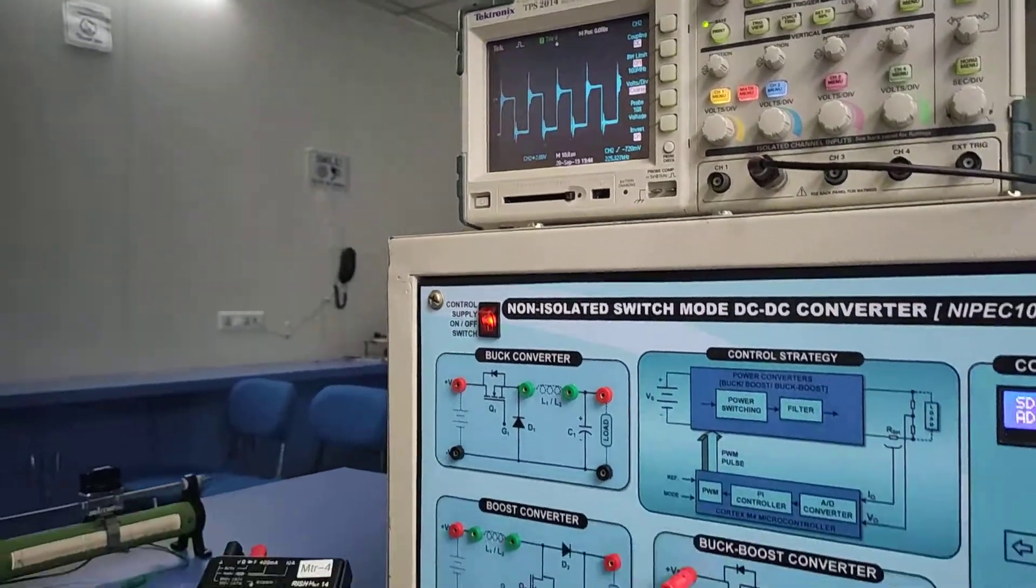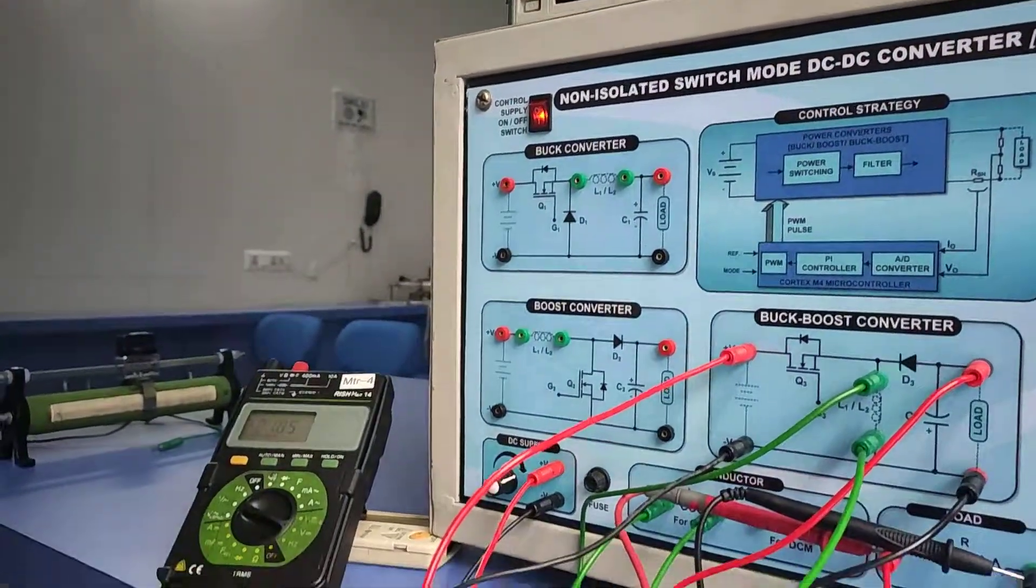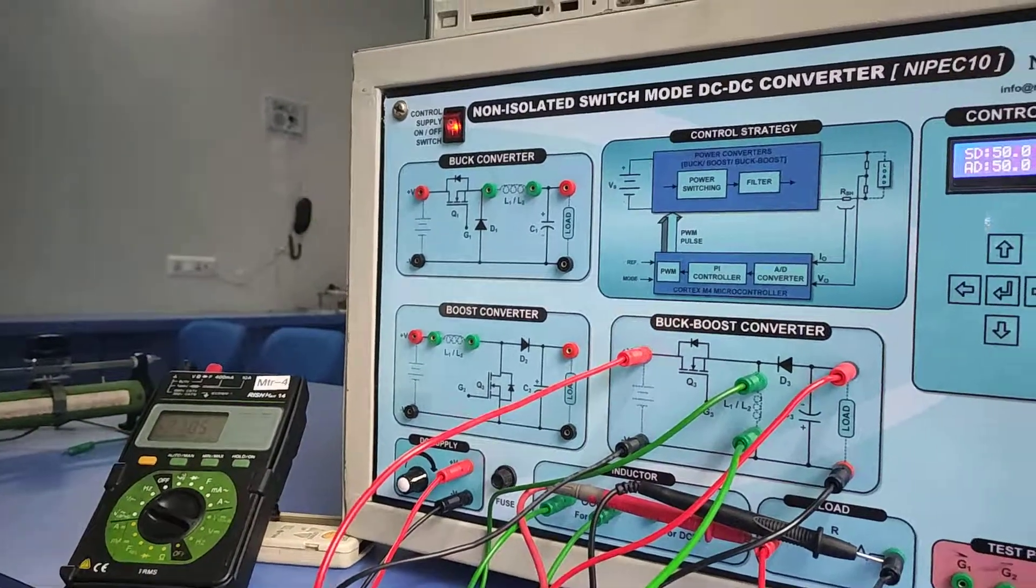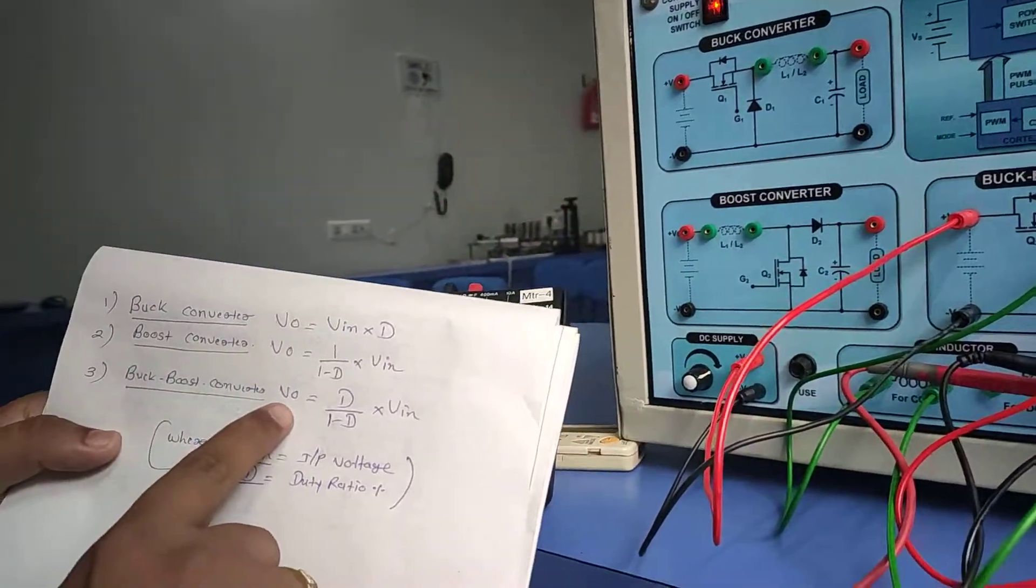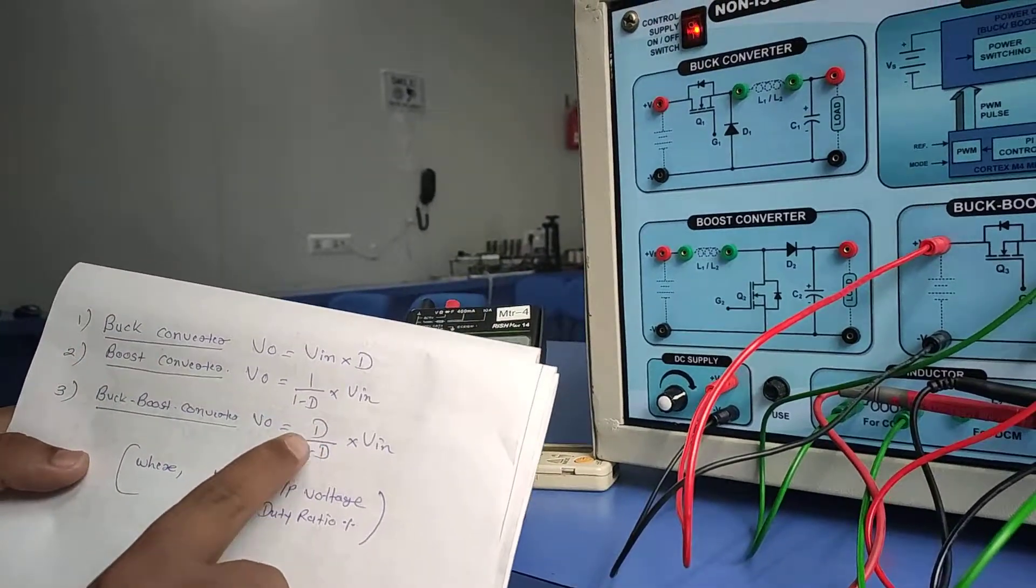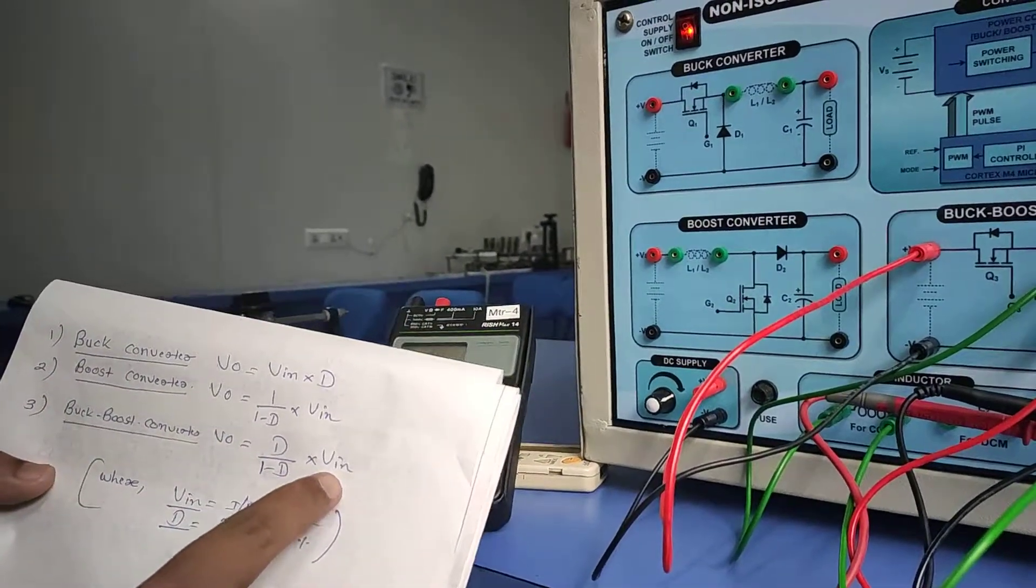The output equation for the buck-boost converter is: output voltage equals d divided by (1 minus d) times V_in.